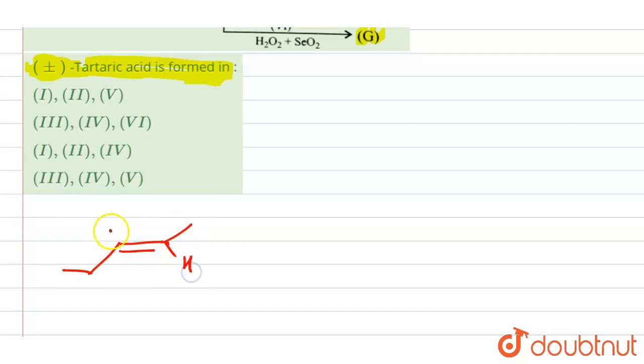Here we have fumaric acid. This is our double bond, H here, and here also we have H, and at this position we have the COOH group, so we have COOH group. So here we have it now like this.